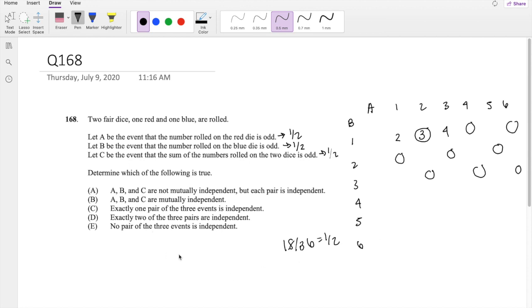So now the question is basically: are these mutually independent, or are these pairs independent? In order to find independence, we can use the independence formula: probability of A and B equals probability of A times probability of B. So we can check these for each of them.